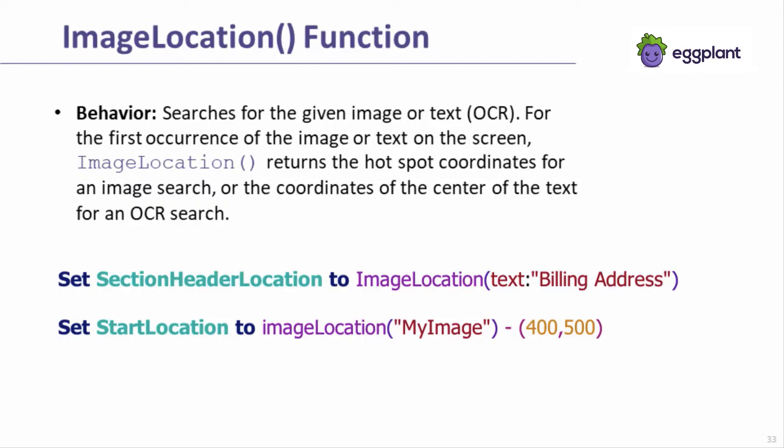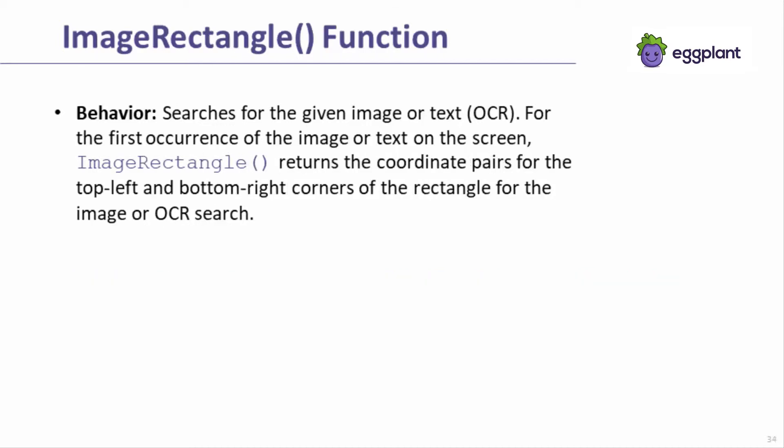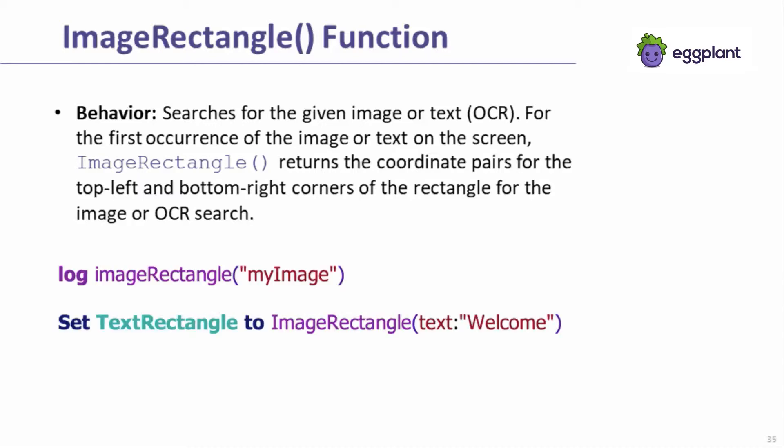Subtracting from a point moves that point farther up the screen or to the left, while adding to the point will move it farther down or to the right. Image rectangle is similar to image location, but it returns a list of two coordinate pairs. The first pair represents the top left corner of the image or OCR text rectangle on the screen, and the other represents the bottom right corner. Here are two examples showing basic use of image rectangle.